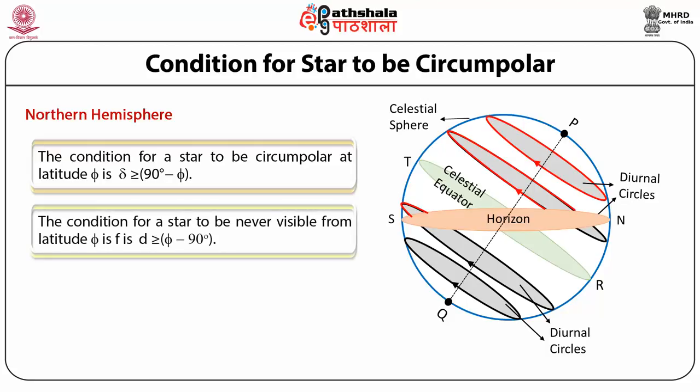The condition for a star to be never visible from latitude phi is that its declination should be less than phi minus 90°.